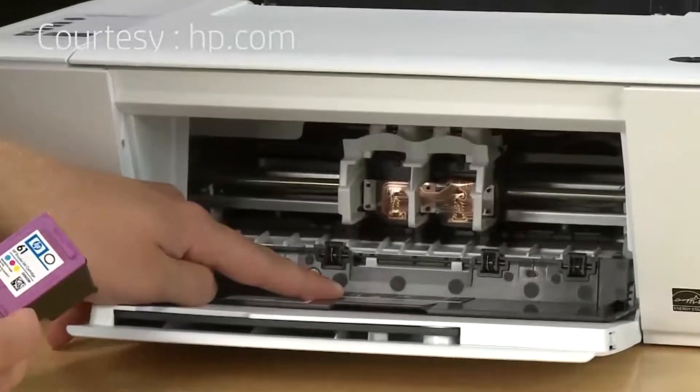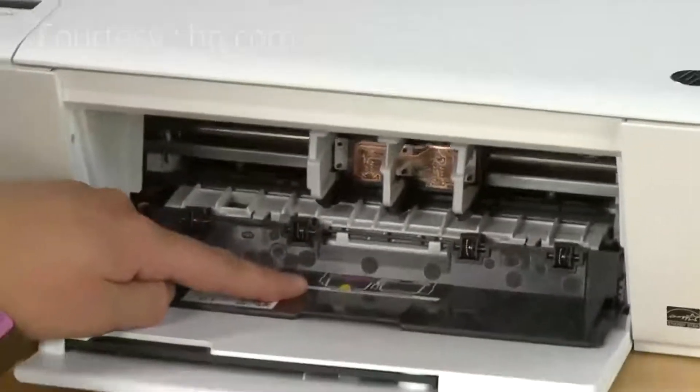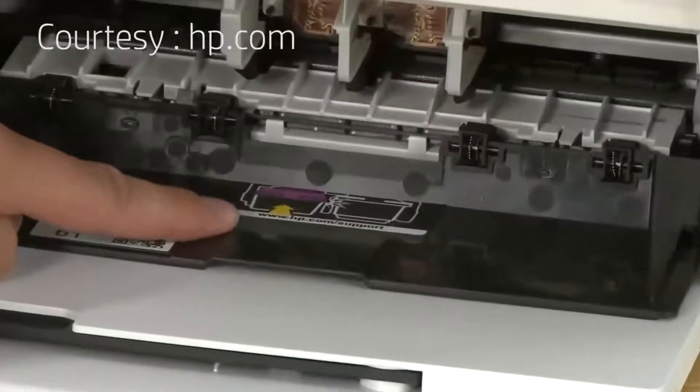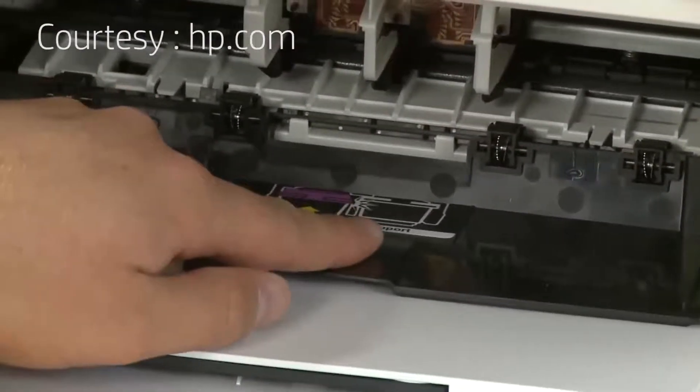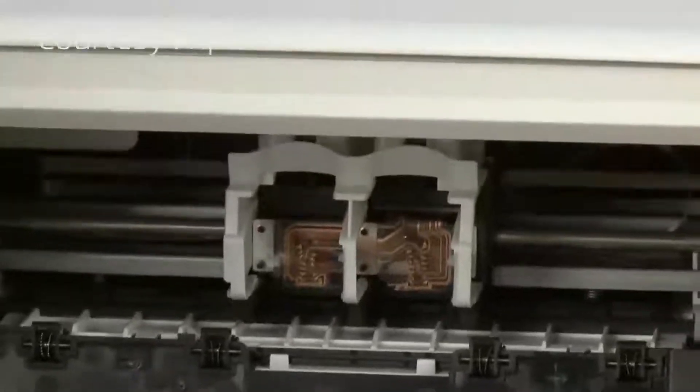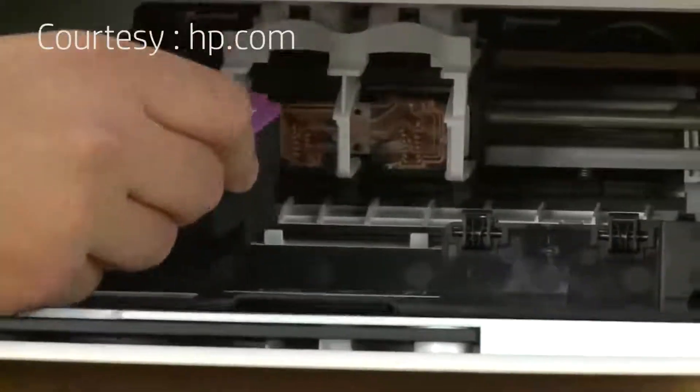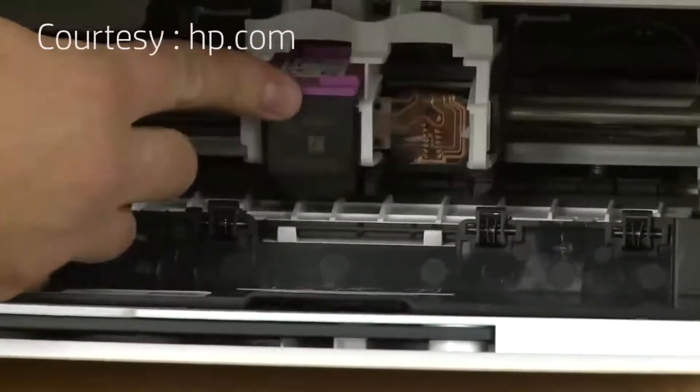The graphic on the inside of the ink cartridge door will tell you which cartridge goes in which slot. Slide the tri-color cartridge into its correct slot on the left hand side and then push the cartridge all the way in until it snaps into place.